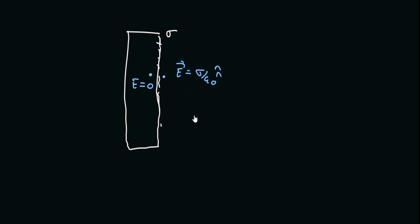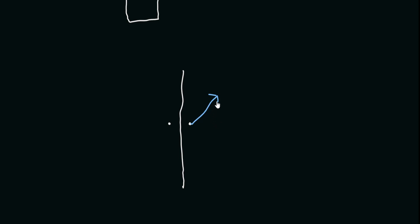Let us study the discontinuity and find out the amount by which the electric field is discontinuous across the surface charge density. Let us take a material or a sheet — I'm drawing just the cross-sectional side view of the sheet. Let us take a point just on one side and a point just on the other side. Let the electric field on the first side be E1, and the electric field on the other side be E2.